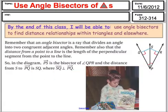We're looking at angle bisectors of a triangle and we're going to be able to use those to find basically distances within either triangles or other types of shapes. Remember that angle bisectors are a ray that divides an angle into two congruent adjacent angles. Remember also that the distance from a point to a line is a length that is perpendicular from the point to the line. So this distance from S to R is actually the perpendicular distance, which is the shortest distance.